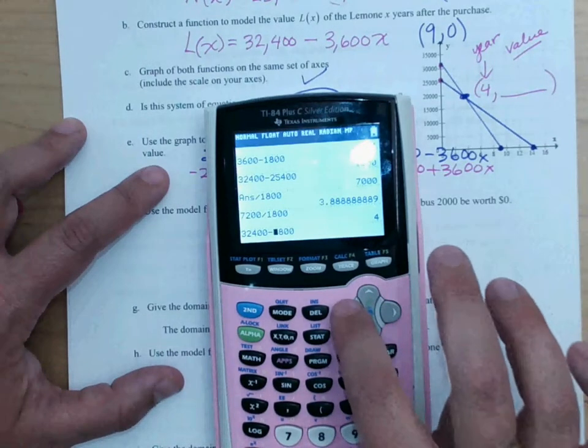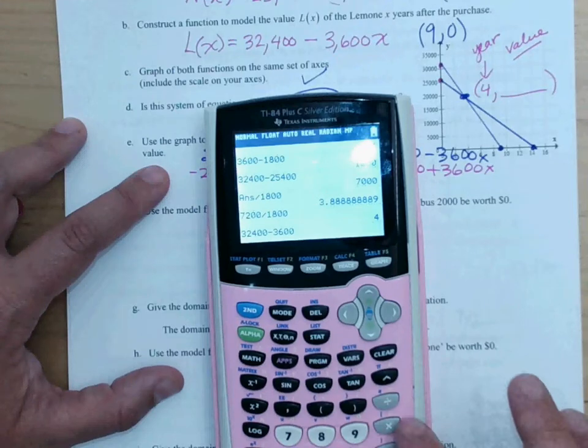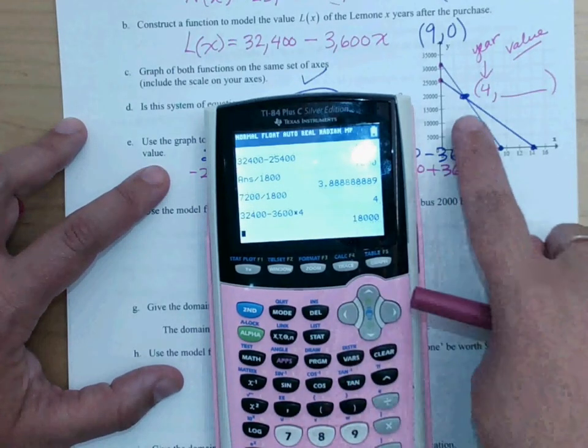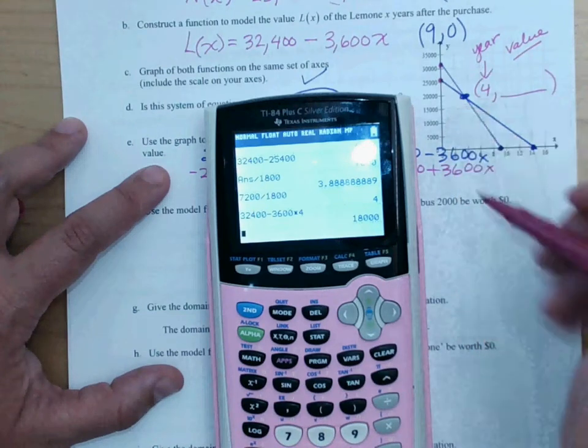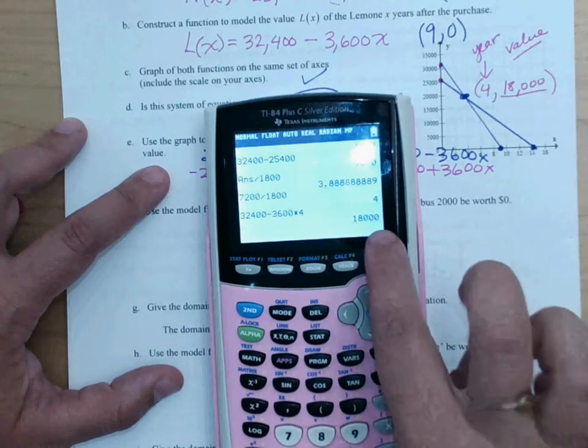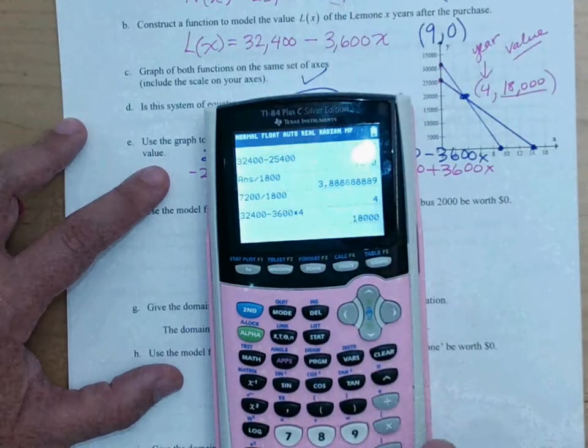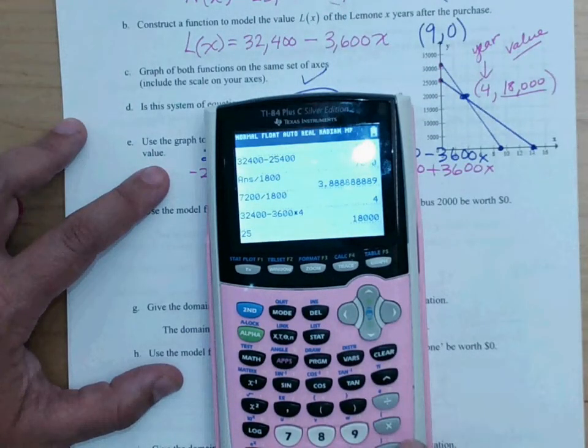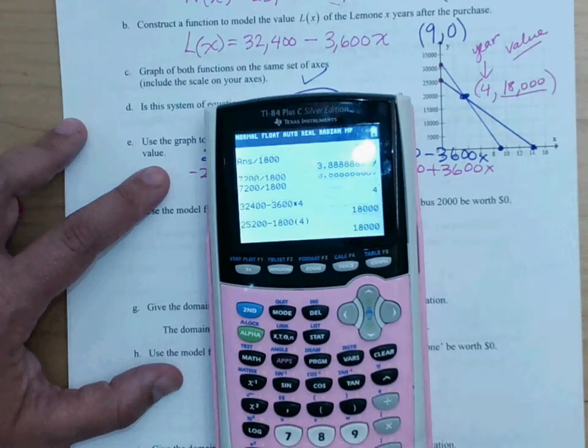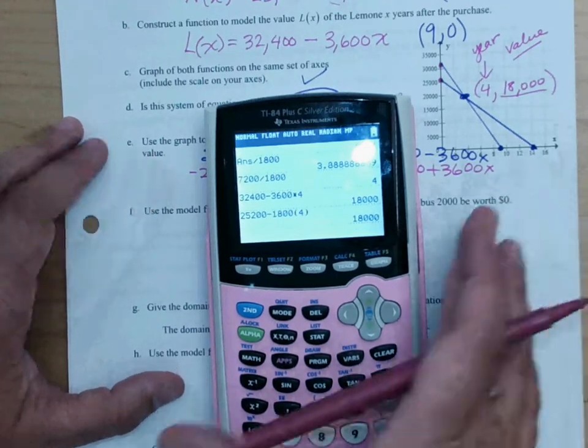I get, oh see. I couldn't tell exactly because my point was so big. The value is 18,000. Now that should give me the same value on the other equation. So 25,200 minus 1,800 times 4 gives me the same value. Okay?